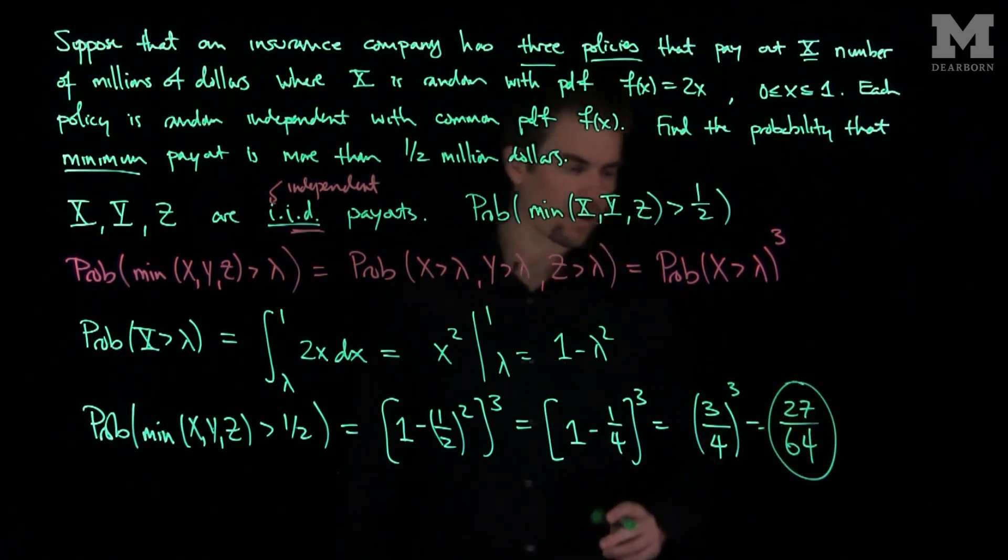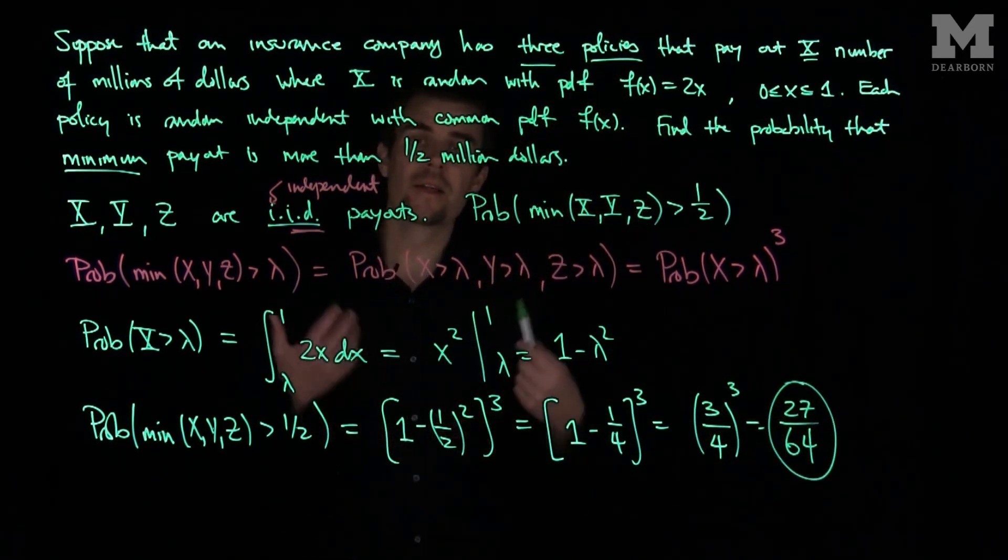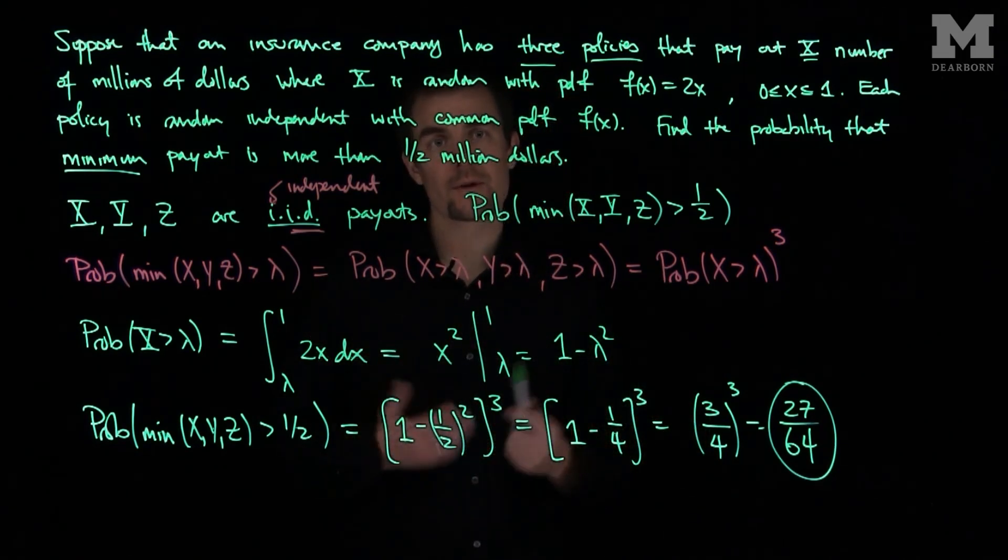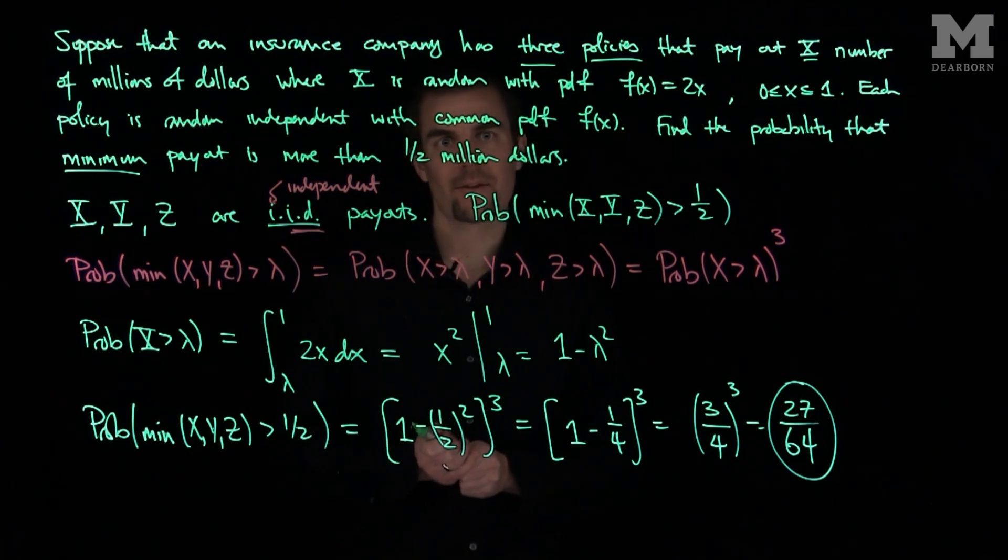So we're going to get 27 over 64. So 27 over 64 is the probability that the minimum payout claim from these three independent, identically distributed insurance policies will be greater than half a million dollars. Thank you very much.